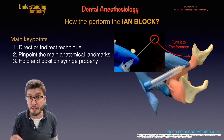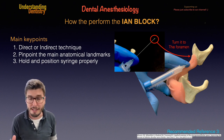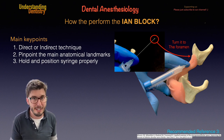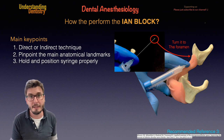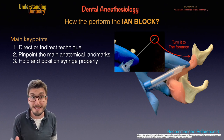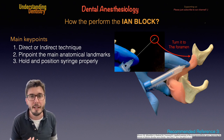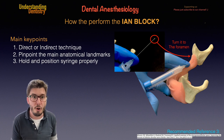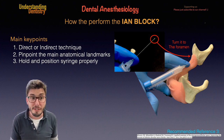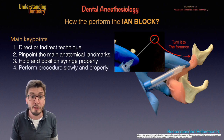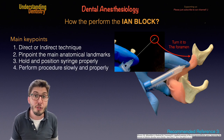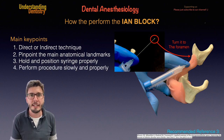Also consider reference number three if you want to review the techniques — there are actually several options. I'm talking about the ones that I use and the key points that are very important for me to always achieve a very nice inferior alveolar nerve block. The fourth key point is to perform the procedure slowly and properly.